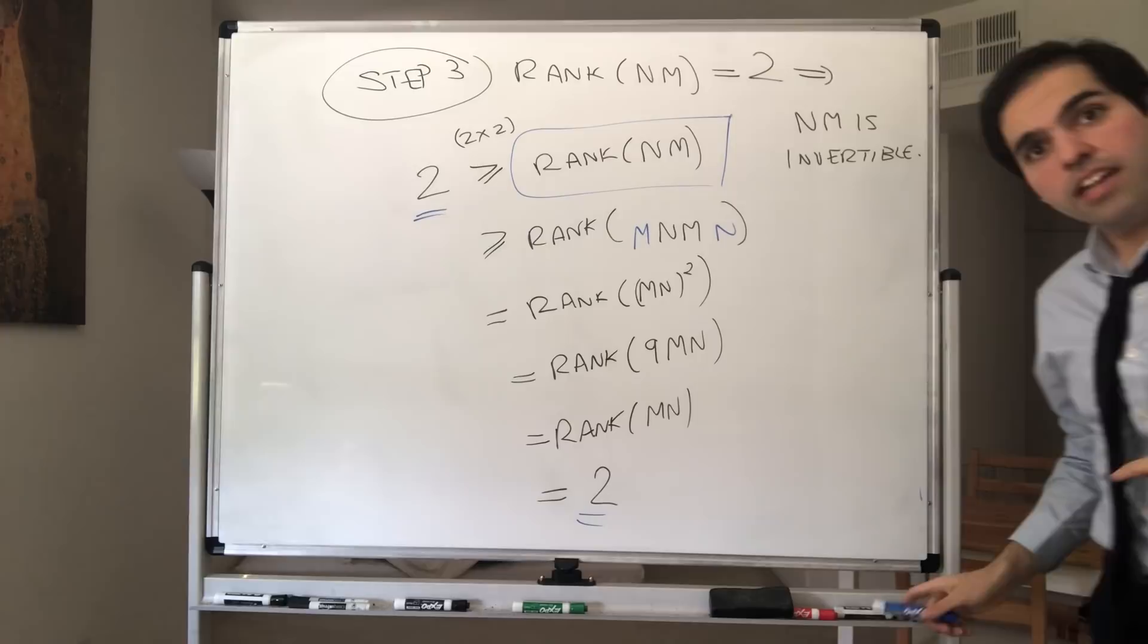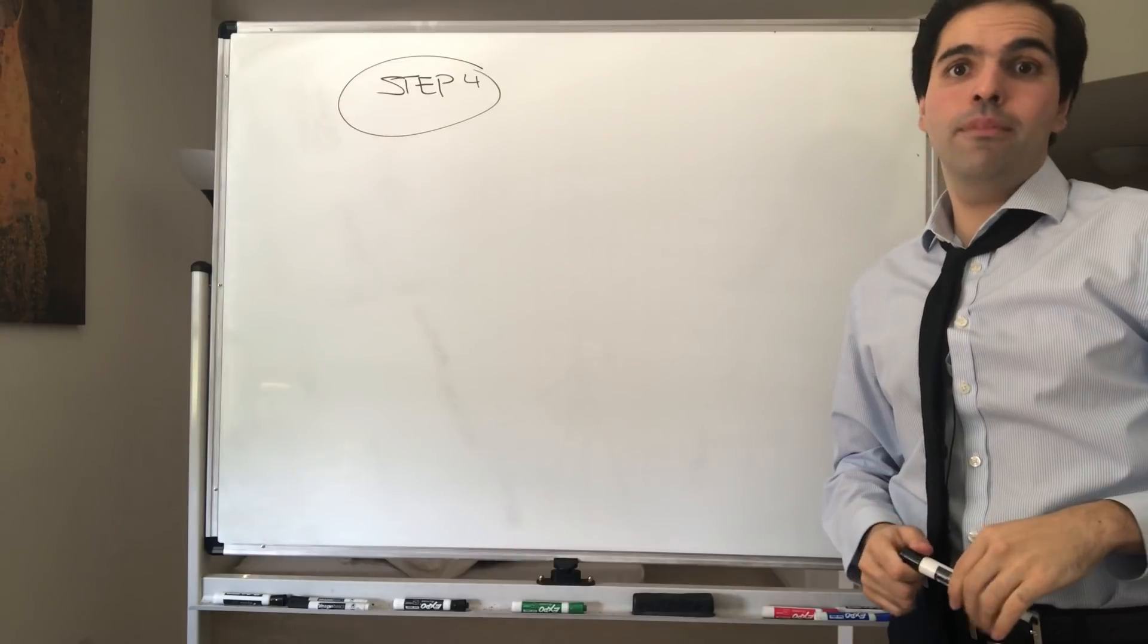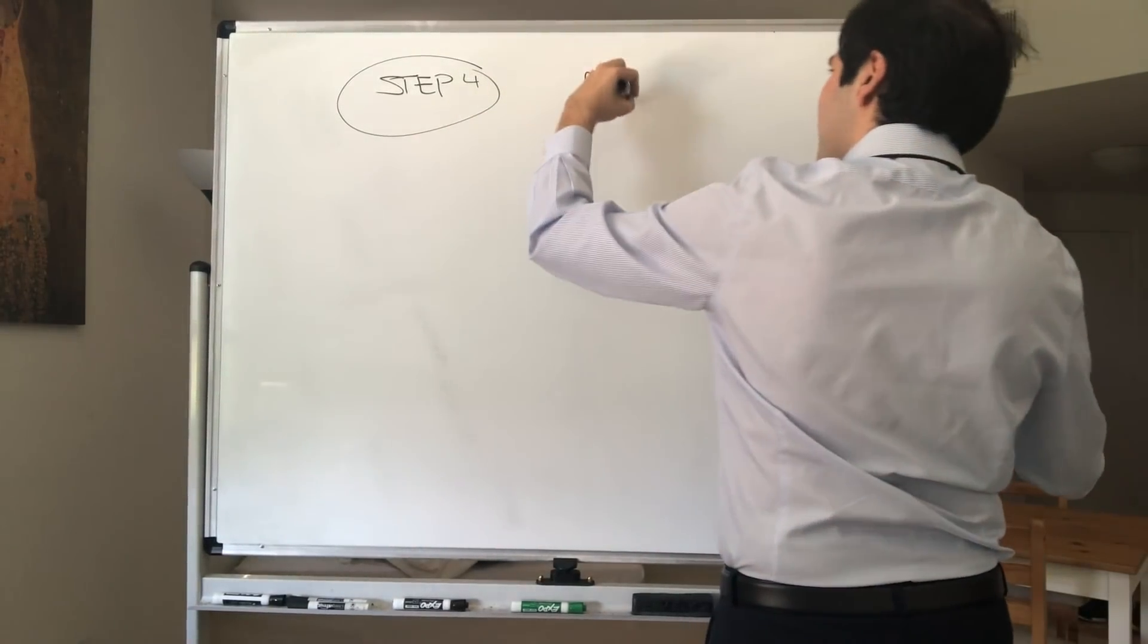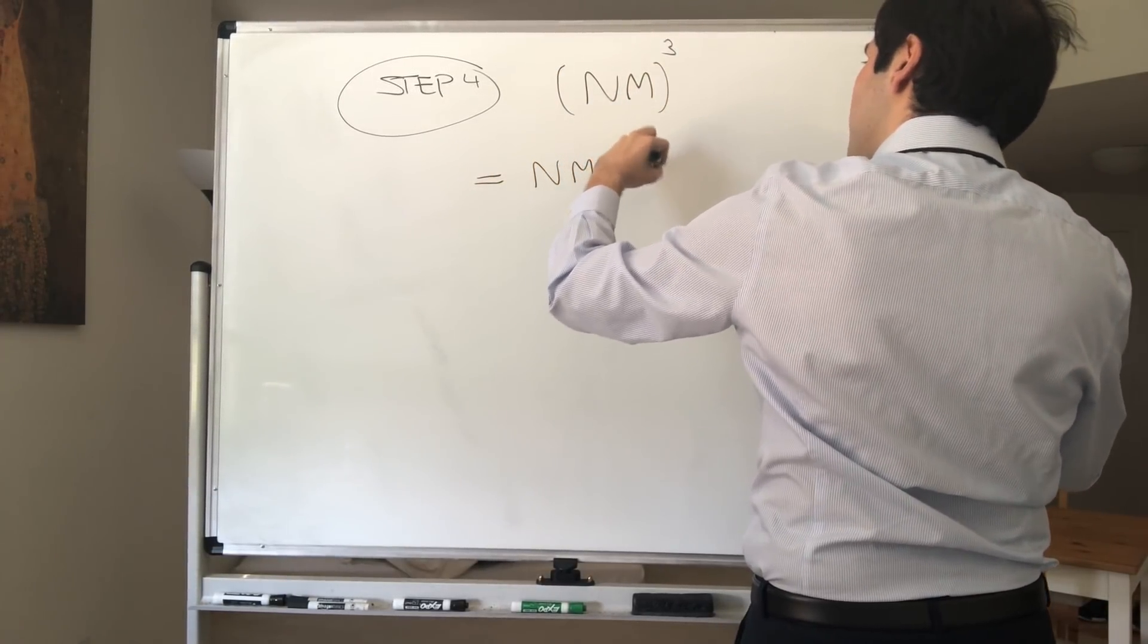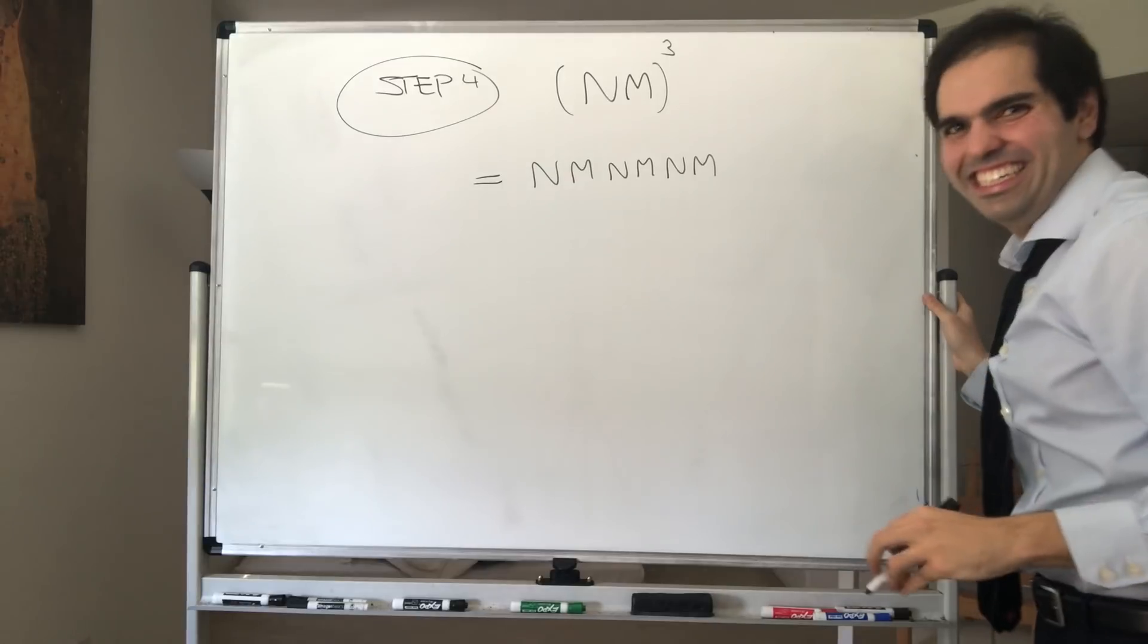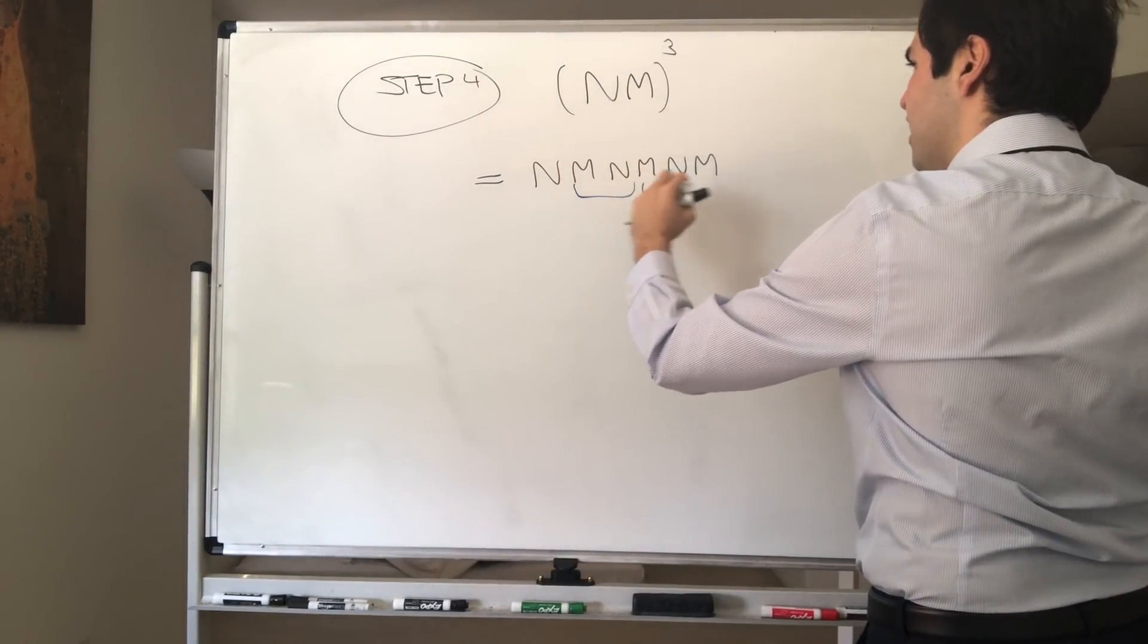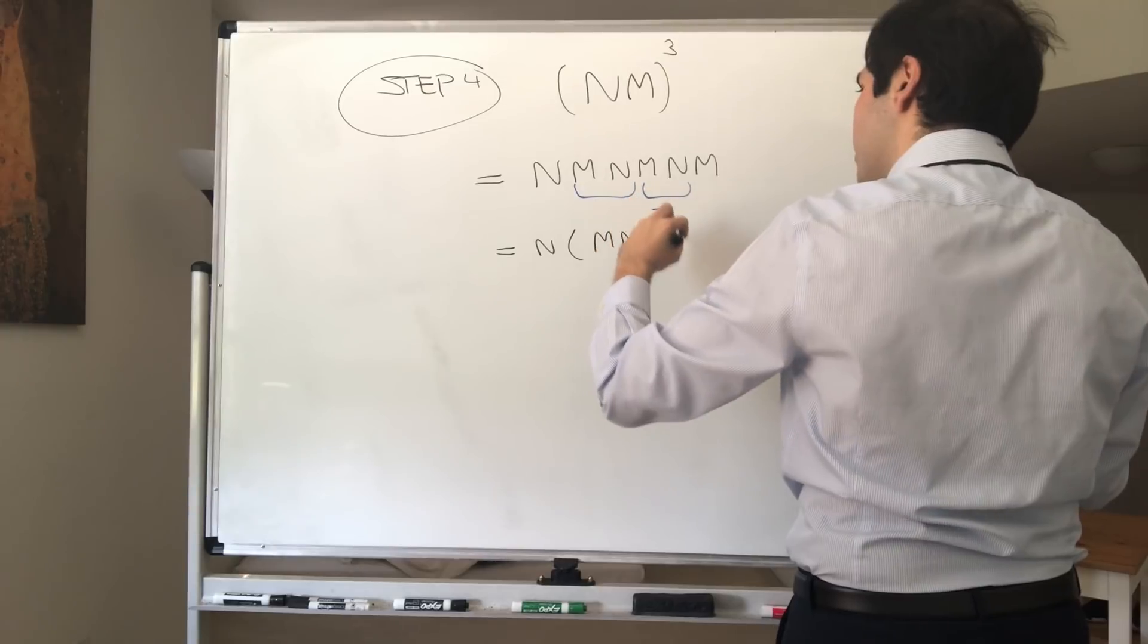And it turns out, from this we can conclude, because how about, and why not, we calculate NM cubed. And this is NM NM NM. So, lots of peace upon you. So, NM cubed. Well, that's the same thing as NM, NM, NM. NM, NMN, Eminem, or M&Ms. But, however, what do we know? So, this is just N times NM times NM times NM.